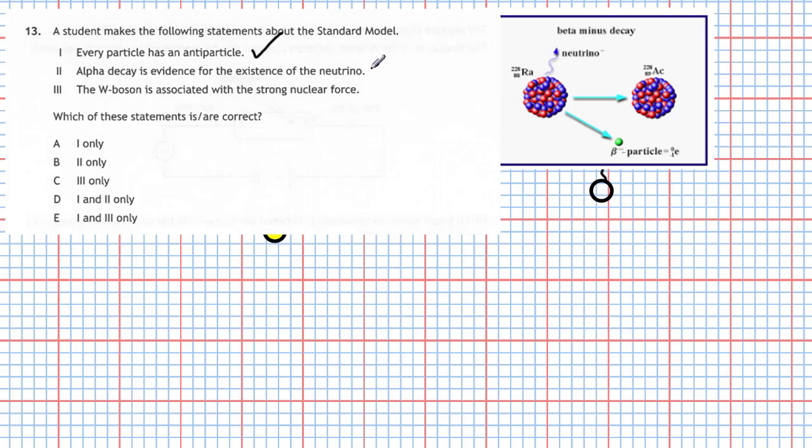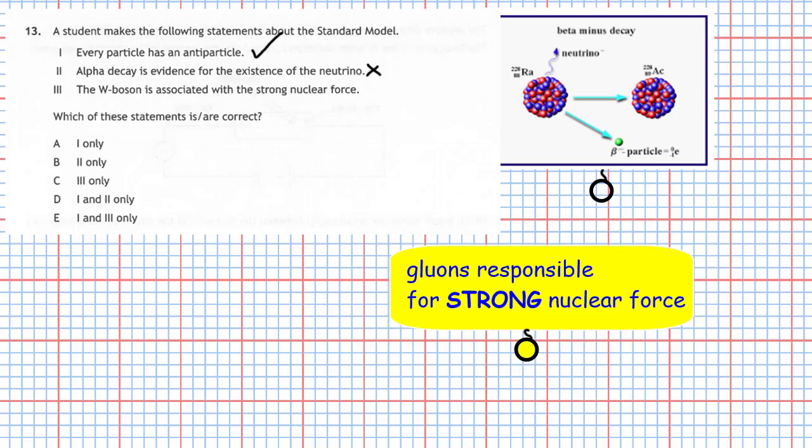What about the next one? The W boson is associated with the strong nuclear force. Well, that's incorrect as well. The reason why that's incorrect is because gluons are responsible for the strong nuclear force, not the W boson. So that one is incorrect as well.